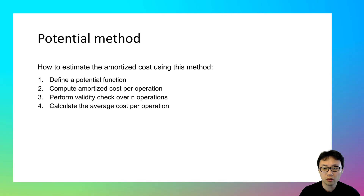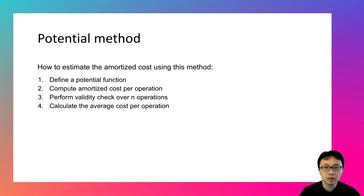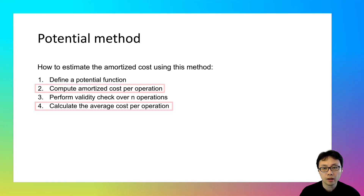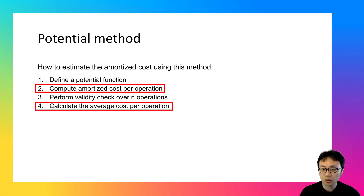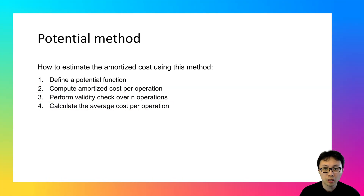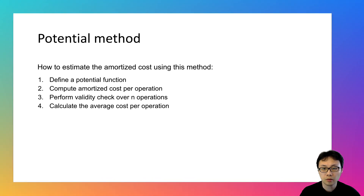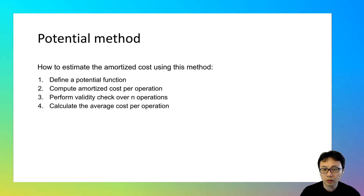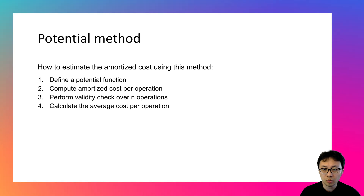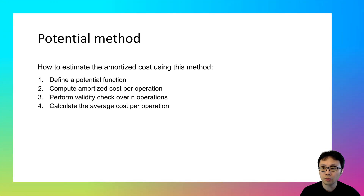The last step is to calculate the average cost per operation based on step 3, by dividing the total amortized cost by N. Steps 2 and 4 are nearly the same for most cases, and the difference is trivial. An advantage of the potential method is that if you have a valid potential function, you can immediately deduce the amortized cost per operation. Going through steps 3 and 4 makes the process more robust and free of mistakes.